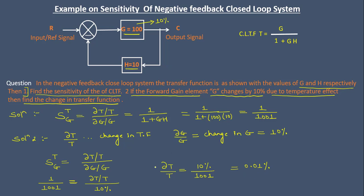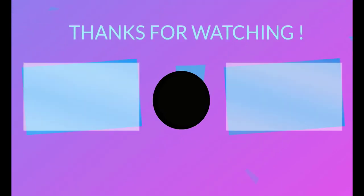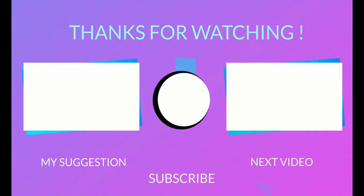This is a very important conclusion from this example. Even if the forward gain element changes by 10%, the overall transfer function changes by only 0.01%. This demonstrates a key advantage of using a closed-loop system.